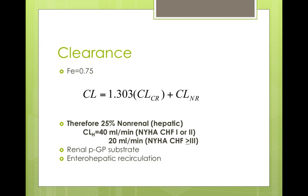I always look at clearance first — I think clearance is usually paramount for answering a lot of other questions. The first thing I ask with clearance is: what are the major organs of clearance? In this case, the FE is 0.75, so that means 75% of it will end up in the urine as unchanged parent drug, which means it's 75% cleared by the kidneys and 25% cleared by something else — in this case, probably non-renal or hepatic.